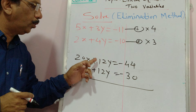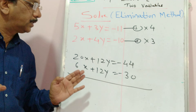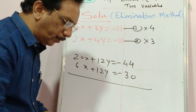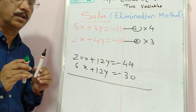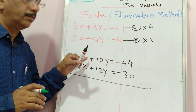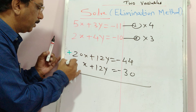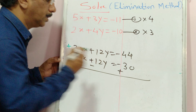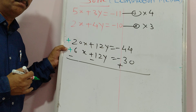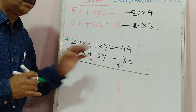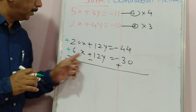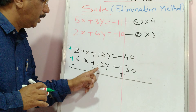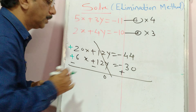Now both coefficients of y are equal, but both signs are positive (plus plus), so 12 plus 12 would give 24 — they do not cancel by addition. Therefore, we subtract the second equation from the first. To do this, change the sign of each term in the second equation: plus becomes minus, minus becomes plus. Now plus 12y and minus 12y cancel out (eliminated, equals 0).